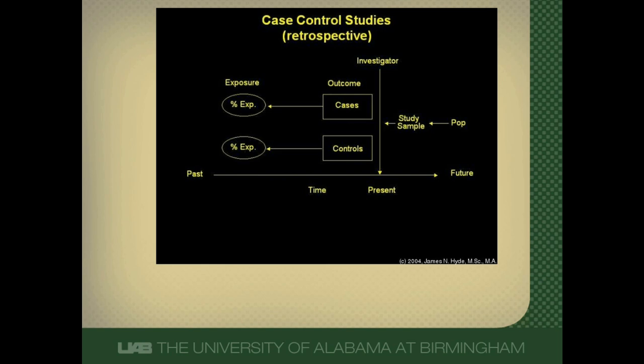Going backwards in time puts us at risk of making errors or the study being biased. Determining exposures retrospectively requires adequate records to be available and requires people to remember their exposure status. So there's risk in this type of study of getting an errant answer. Remember, a case control study starts with cases who are diseased and control patients who don't have disease, then goes backwards in time for exposures.